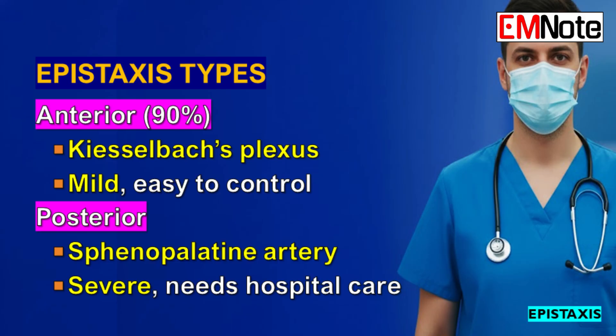Which patients should make us immediately suspicious of a posterior bleed? Older patients — definitely anyone over the age of 60, often due to age-related changes in mucosa plus more underlying health conditions. We really worry about people with hypertension, those on anticoagulants or multiple antiplatelet drugs, and patients with known vascular diseases like atherosclerosis.